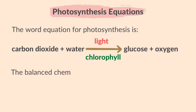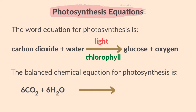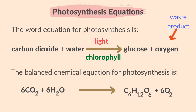The balanced chemical equation for photosynthesis is 6CO2 + 6H2O giving C6H12O6 + 6O2.